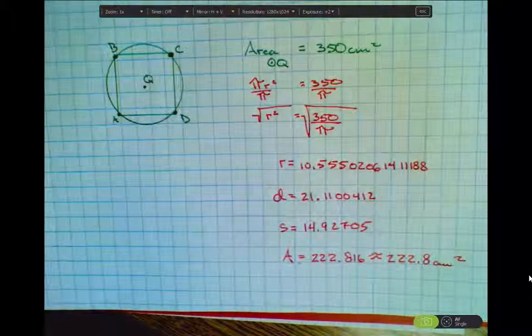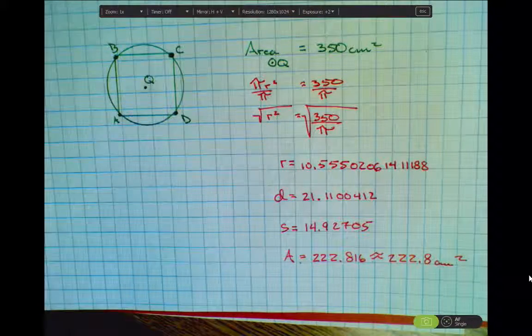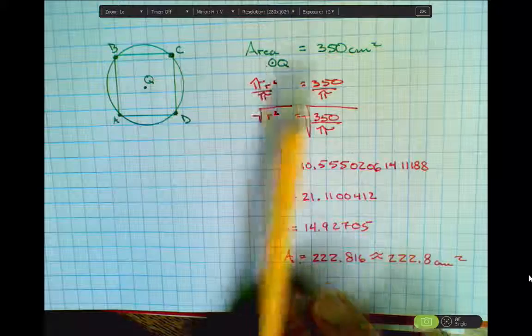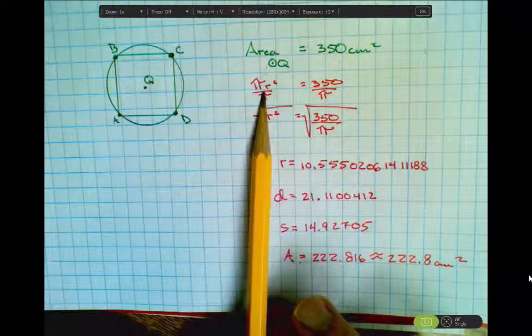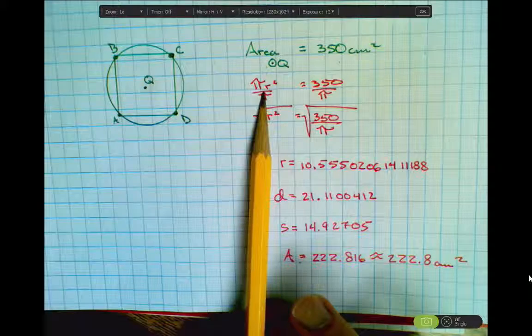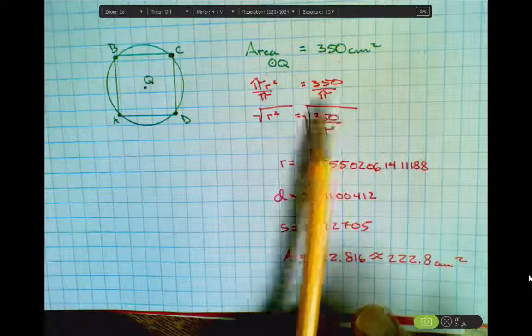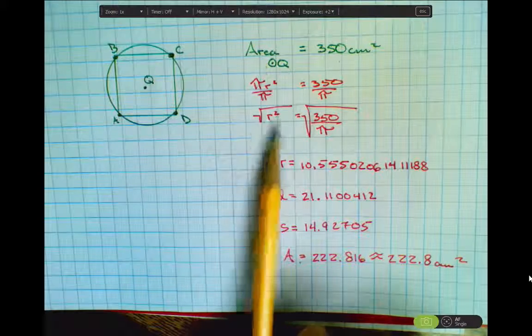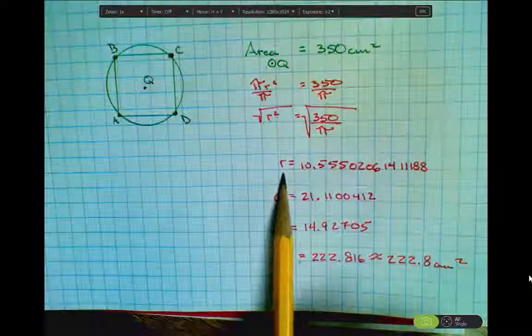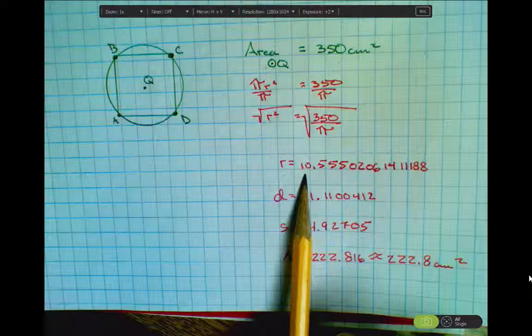Question number 13. They give you the area of the circle, and they're asking for the area of the square. So if the area of the circle is 350 square centimeters, we know the formula is pi r squared. So if I'm going to solve for the radius, I'm going to divide both sides by pi, and then undo squaring the radius by taking the square root. That gets me a radius of approximately 10 and a half.